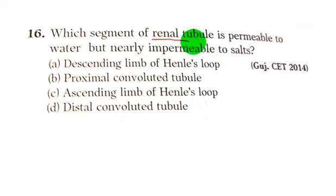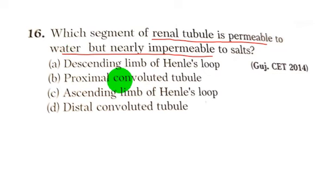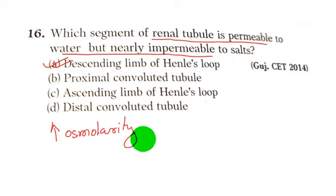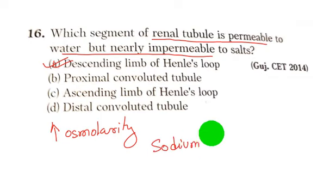Which segment of the renal tubule is permeable to water but nearly impermeable to salts? Out of the options given, the descending limb of Henley's loop is permeable to water. Water gets reabsorbed here due to increasing osmolarity of the interstitial fluid, but it is impermeable to salts — that is sodium and electrolytes.